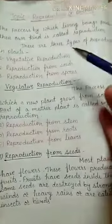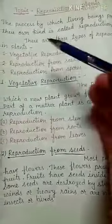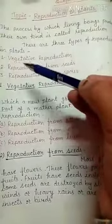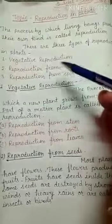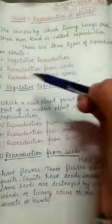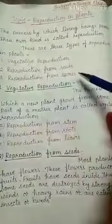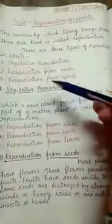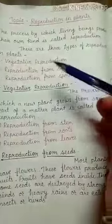There are three types of reproduction in plants: first, vegetative reproduction; second, reproduction from seeds; and third, reproduction from spores.